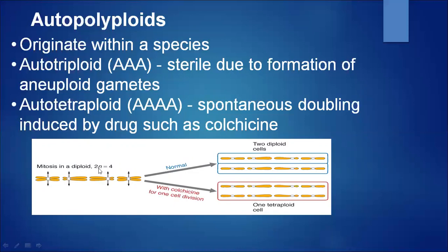In a diploid with 2N=4 undergoing normal mitosis, two diploid cells are formed. But with colchicine treatment for one cell division, one tetraploid cell is produced. When plants are treated with colchicine, polyploid development takes place.